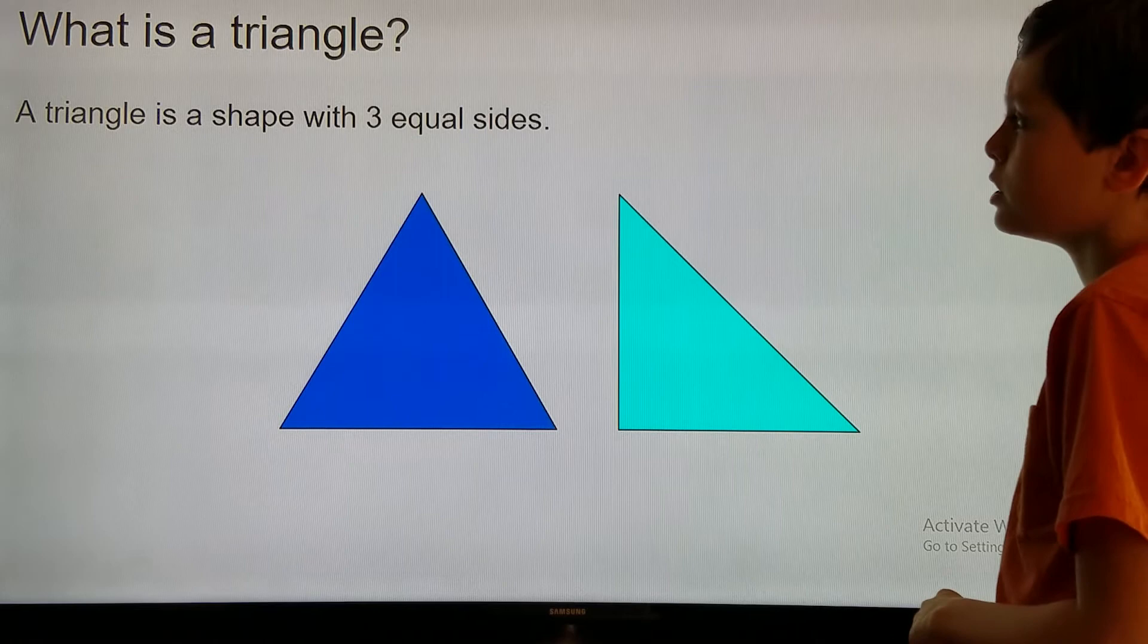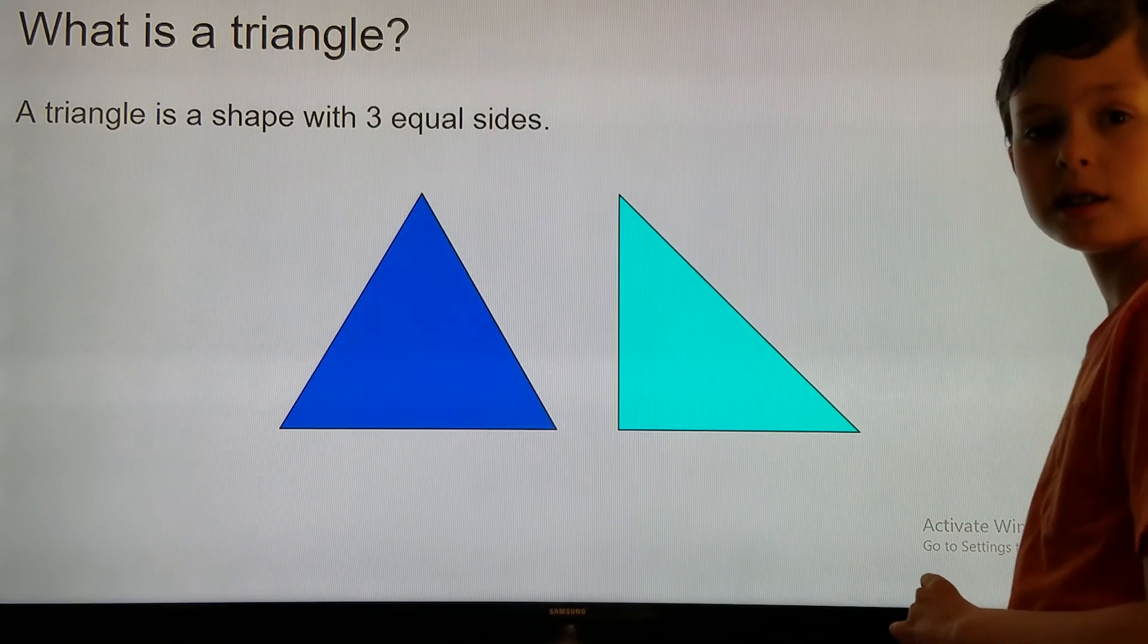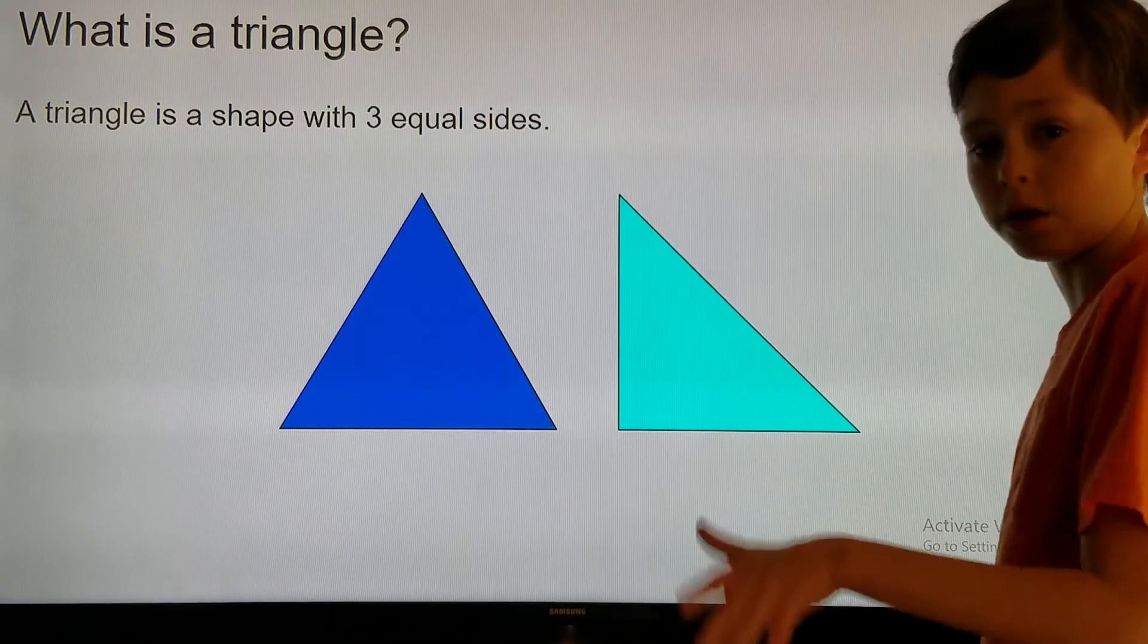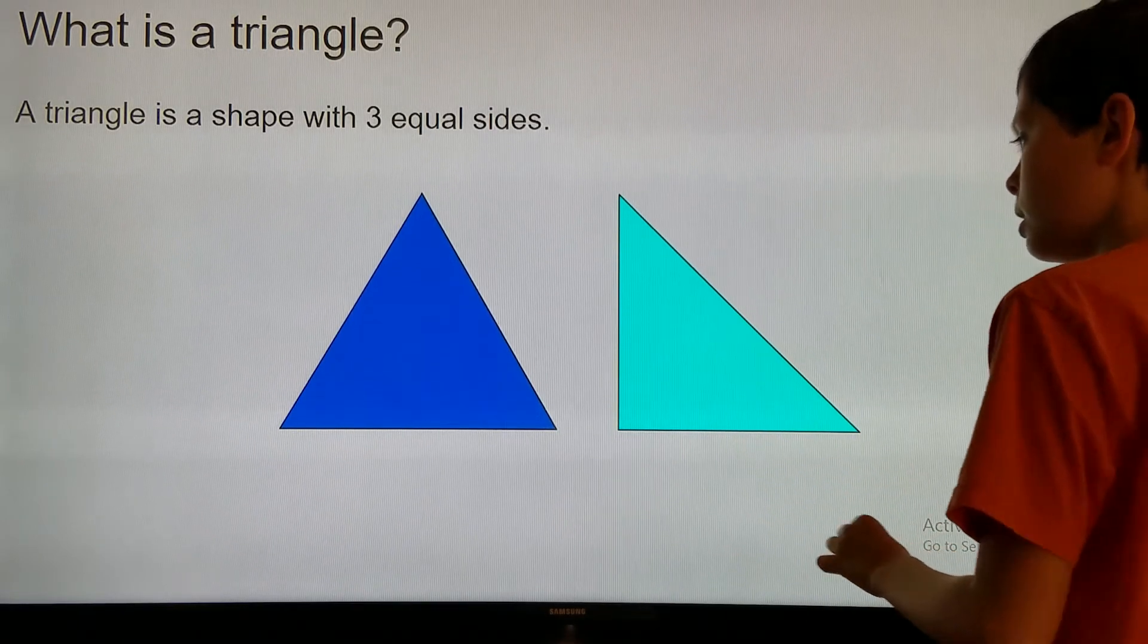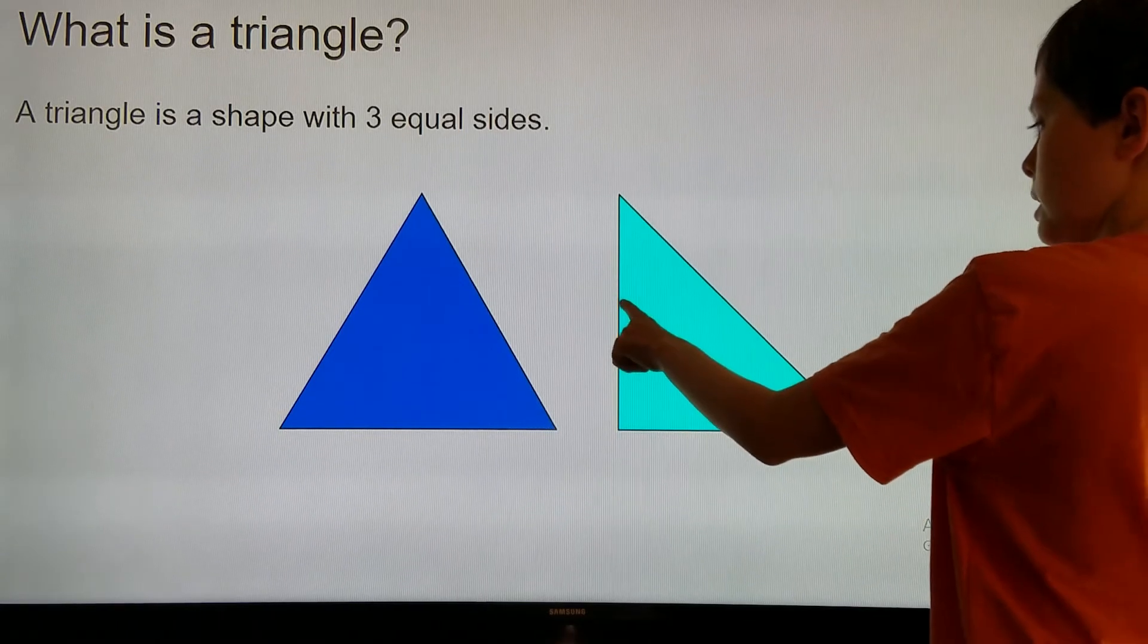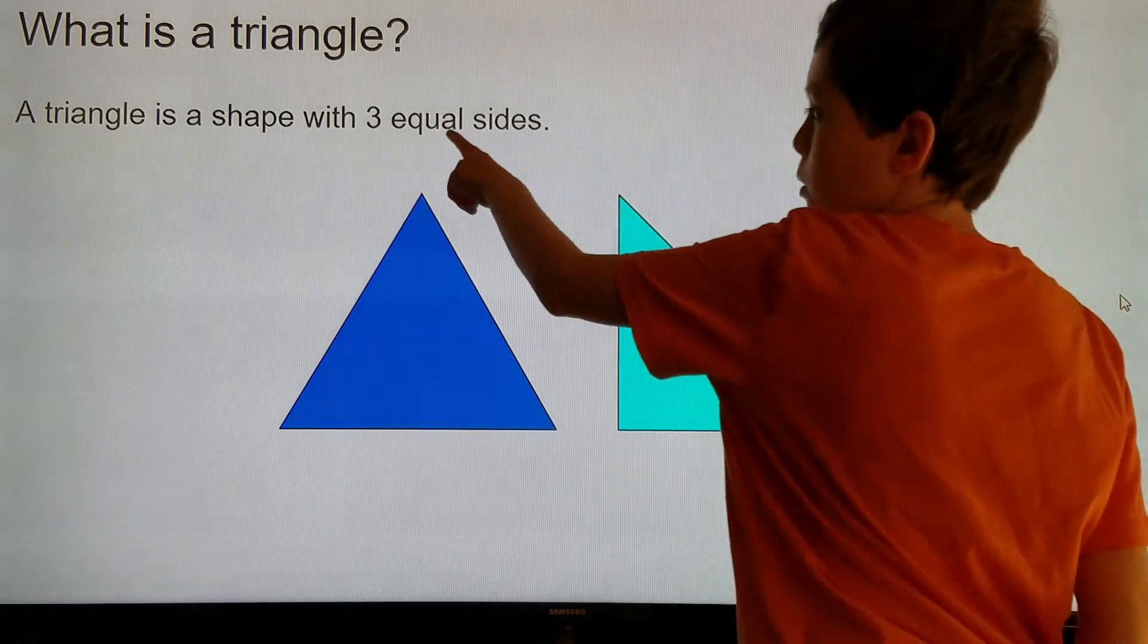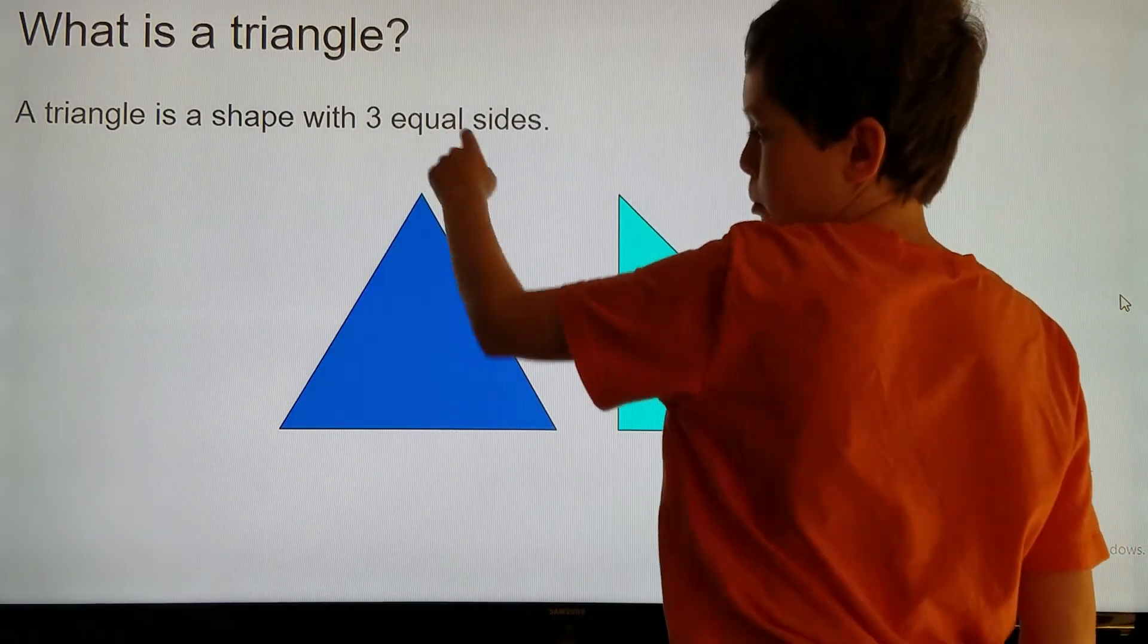Now, a triangle doesn't always have to have three equal sides. It can have just three sides. So, this one, if you notice, this side is longer than this side and this side, but it's still a triangle because it has three sides. So, equal doesn't always need to be there.